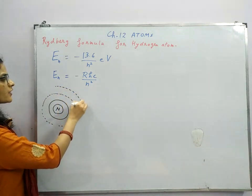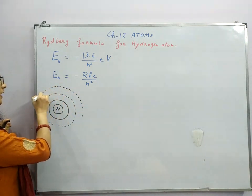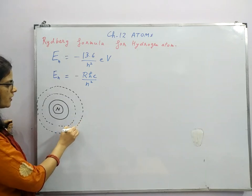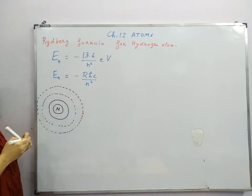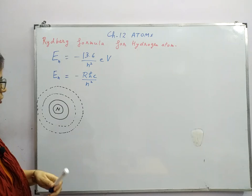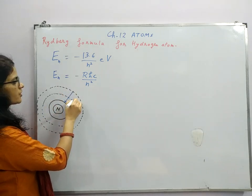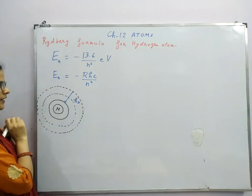We know that when an electron gains energy, it reaches the higher energy levels, but when it jumps from higher energy level to lower energy level, then energy is released in the form of photon.